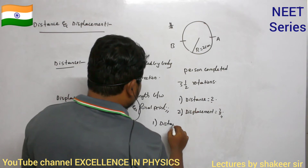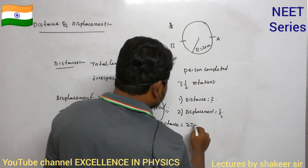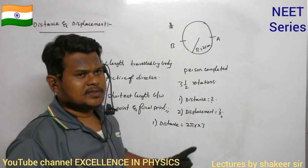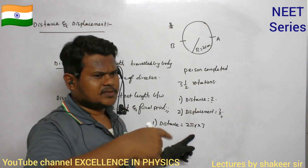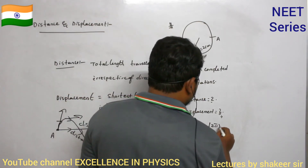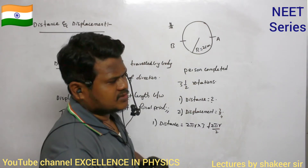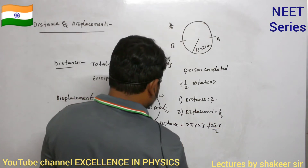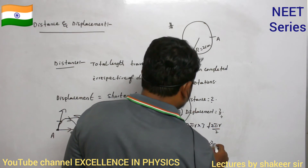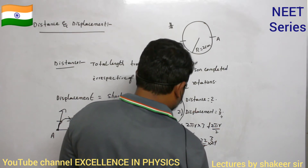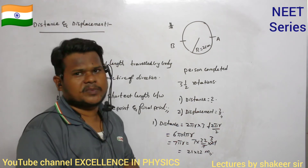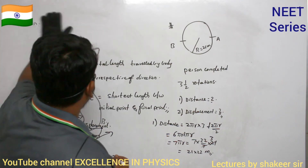Distance traveled: for one rotation the circumference is 2πr, so for three rotations it is 3 × 2πr. For the half rotation, add half the circumference: 2πr/2 = πr. Total distance = 6πr + πr = 7πr = 7 × (22/7) × 21 = 3 × 22 = 462 meters.